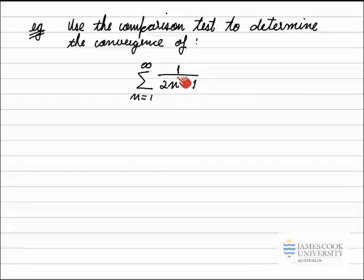I look at this series and I see the dominant term here is 2n. The minus 1 doesn't really make too much difference to the size of each of these terms. It's very close to 1 over n. Now, the sum of 1 over n is the harmonic series, and we know that series diverges. So if I was to have a guess, I think this series would diverge.